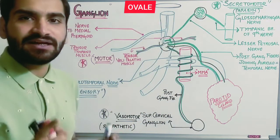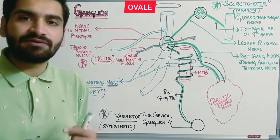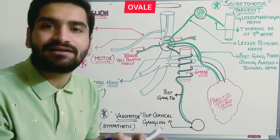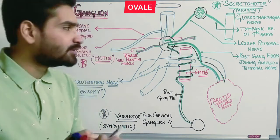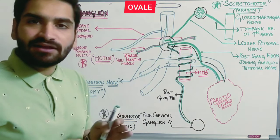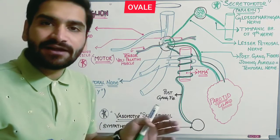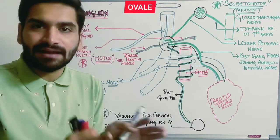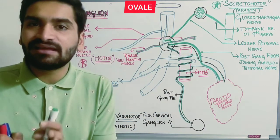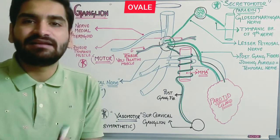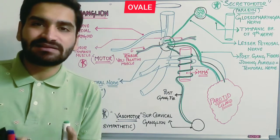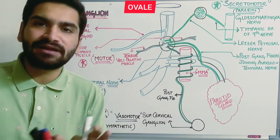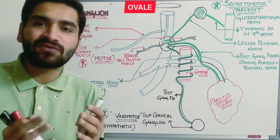Before giving those three divisions, from the main trunk we get a branch called the nerve to medial pterygoid. This nerve to medial pterygoid additionally supplies two more muscles: tensor tympani and tensor veli palatini. These two muscles are supplied along with the medial pterygoid from the nerve to medial pterygoid.